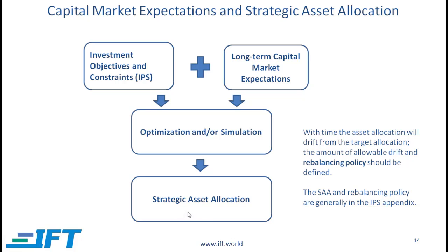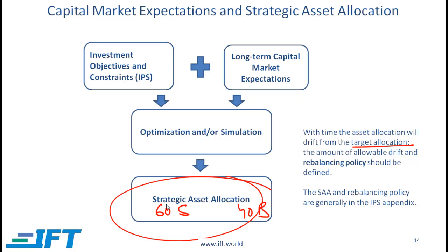For simplicity, let's assume we have defined an asset allocation that is 60% stocks and 40% bonds. With time, the asset allocation will drift from the target allocation. Let's say in a given period stocks do extremely well and we end up with 90% in stocks and 10% in bonds. The IPS needs to define the amount of drift that is allowed — here the drift has been substantial. The amount of drift that is allowed should be defined in the IPS, and the IPS should also define a rebalancing policy.